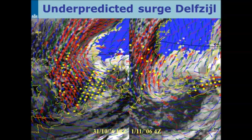In terms of speed, HiRLAM is much better than ECMWF, but the direction is turned relative to the scatterometer arrows, meaning the trough is represented differently. This was at 6 PM, with the surge at Delfzijl harbor occurring at 6 AM — still 12 hours ahead. A forecaster would have received this data about three hours after measurement, leaving nine hours to assess surge implications.